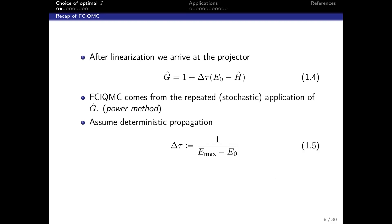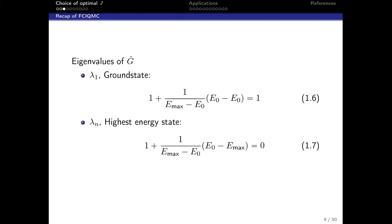In the following discussions I will assume we do a fully deterministic propagation with that operator, with time steps set to create the fastest convergence. We can now calculate the eigenvalues of our projector. The λ₁ eigenvalue corresponds to the ground state with eigenvalue of one, and the highest energy state has eigenvalue of zero.